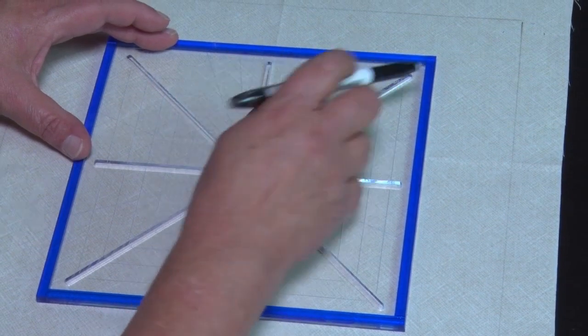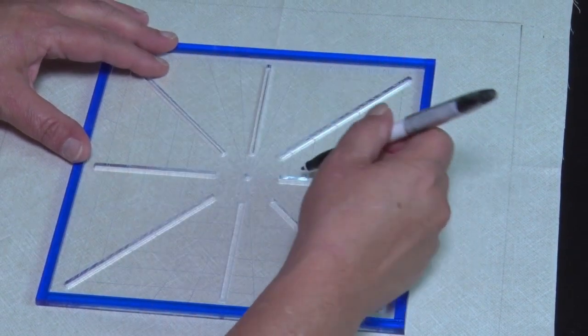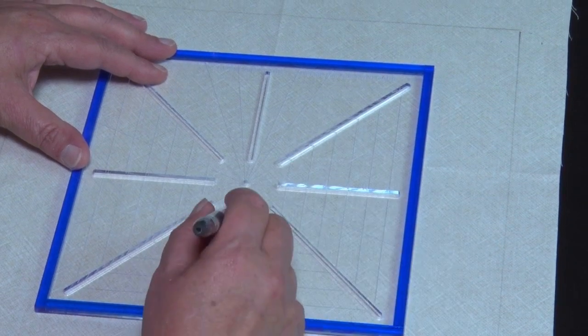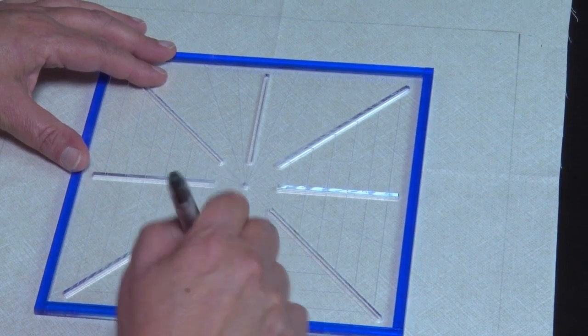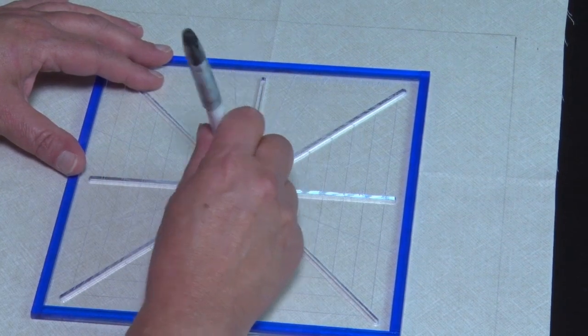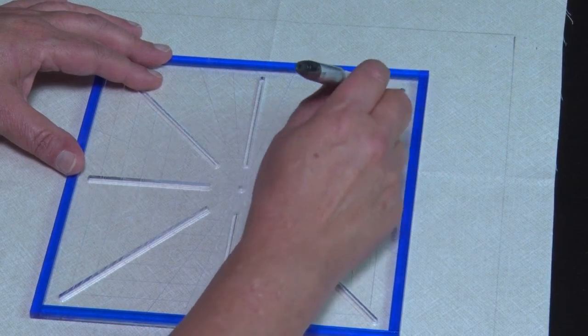And the slots have been designed to take a number of different pens. We can use Chaco liners, we can use friction pens, which I like to use, particularly on light fabrics. On darker fabrics, I like to use a Chaco liner white chalk.